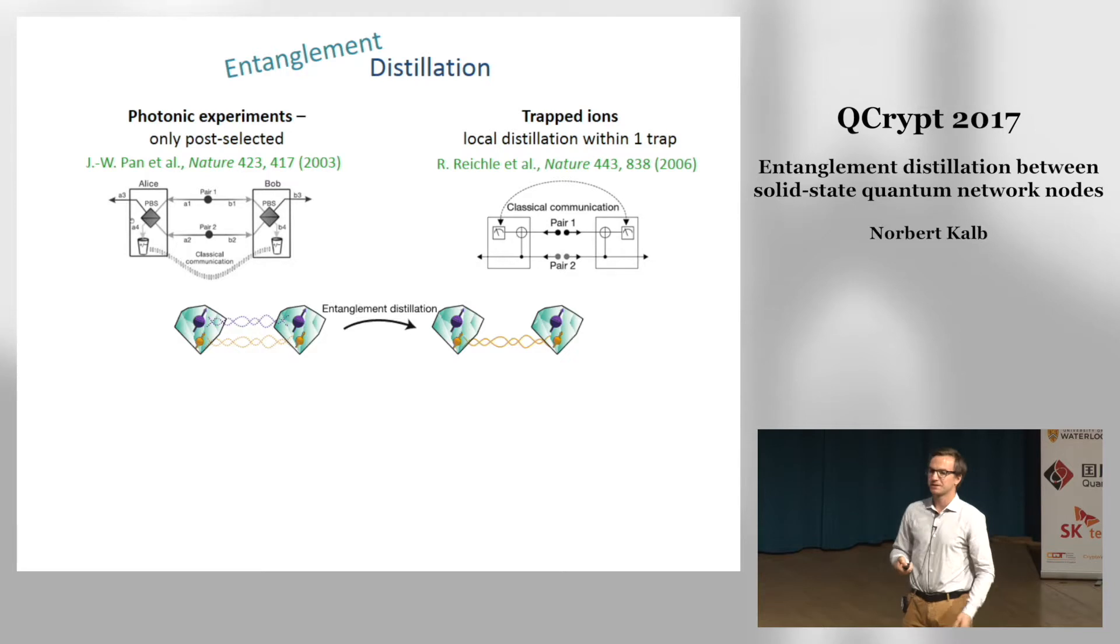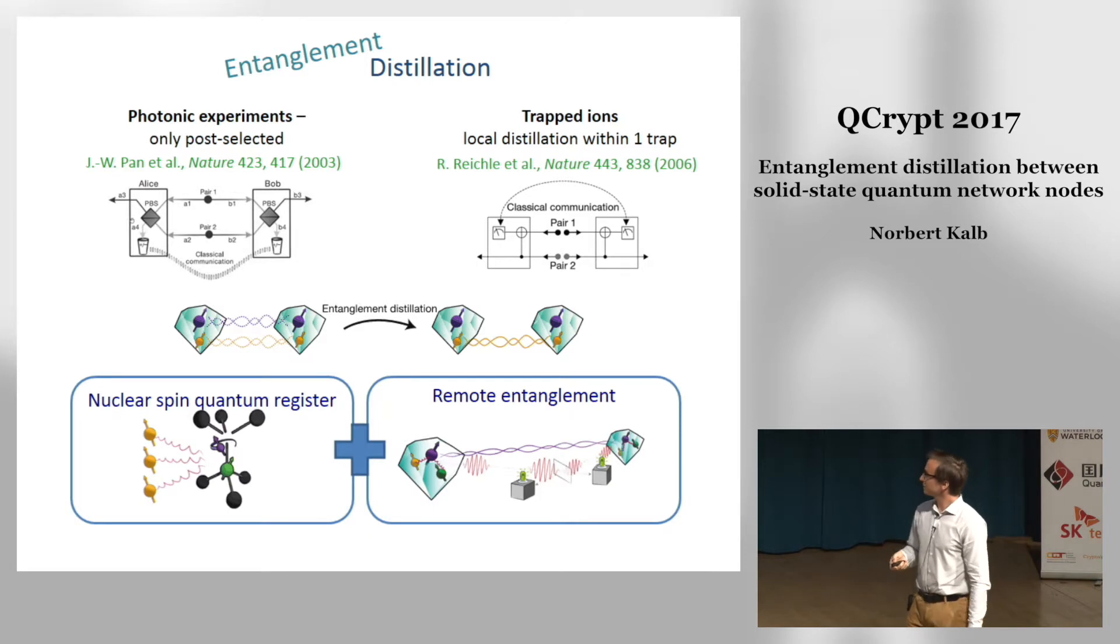There have already been implementations of these protocols in the early 2000s with photons that were post-selected on fourfold coincidences and with trapped ions where all four ions were situated in a single trap. What we do with this experiment is bring entanglement distillation in a deterministic way onto a quantum network where we really use remote entangled states. And to do this we have to marry these two concepts—our nuclear spin quantum register and the generation of entangled states.